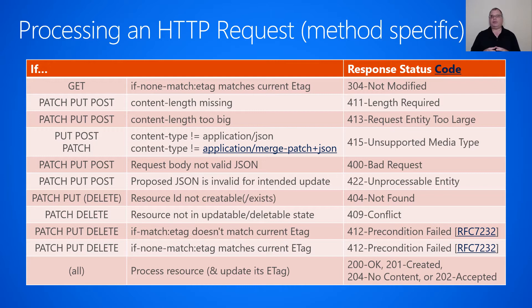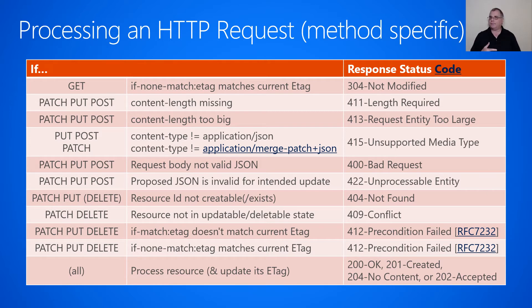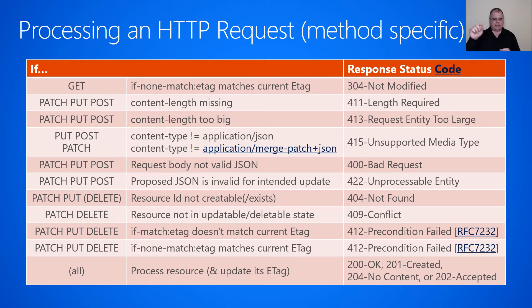For PATCH and PUT, if the resource ID is not creatable for some reason, you could return a 404 not found. For DELETE, if the customer tries to delete something that's not there, we recommend you still return a 200 or maybe a 204. You could have DELETE return a 404 if the resource doesn't exist, but normally we would just return success. If the resource is not in an updatable or deletable state with a PATCH or DELETE request, then you would return 409 conflict. For the last two rows, there's more ETag matching, and if the ETags don't match, you return 412 precondition failed. The order of checking the If-Match header before the If-None-Match header is described in RFC 7232, so this order is required by web standard.